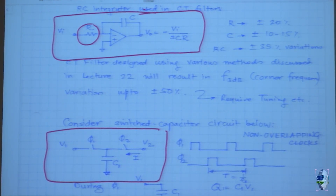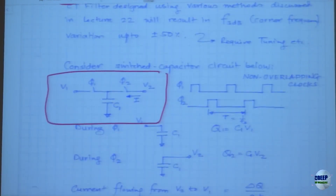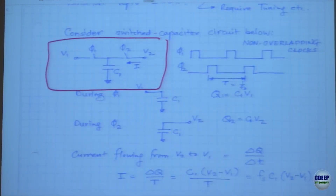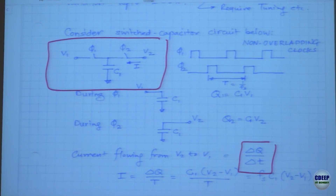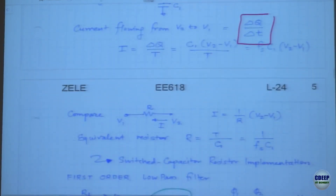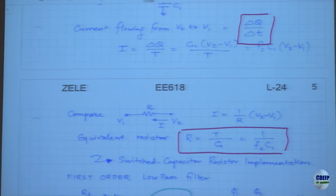By doing this, we are able to see that the value of the resistance — the current is given by delta Q over delta T — and that gives us the value of the resistor as 1 over Fs·C1. This should be understood by now.